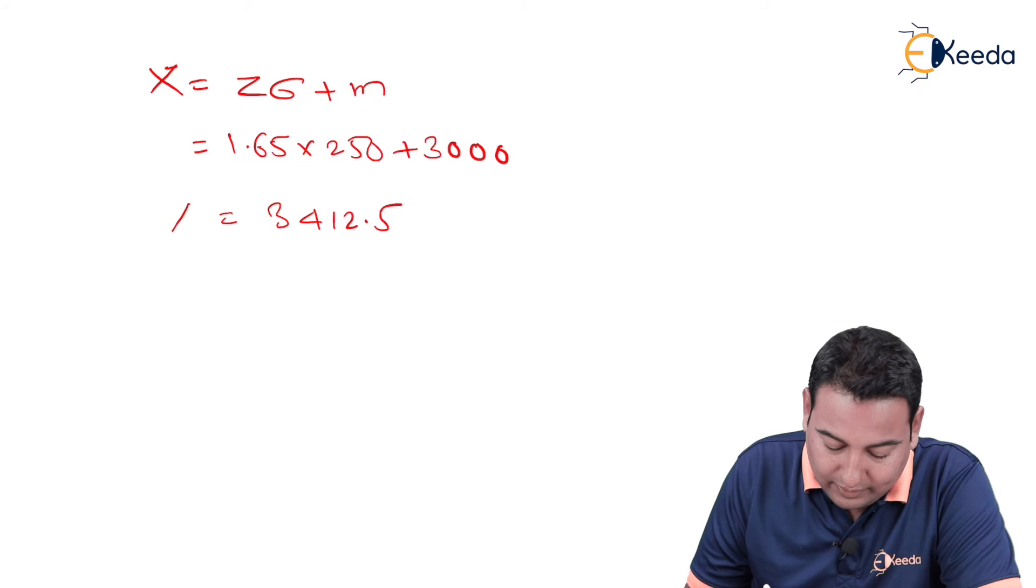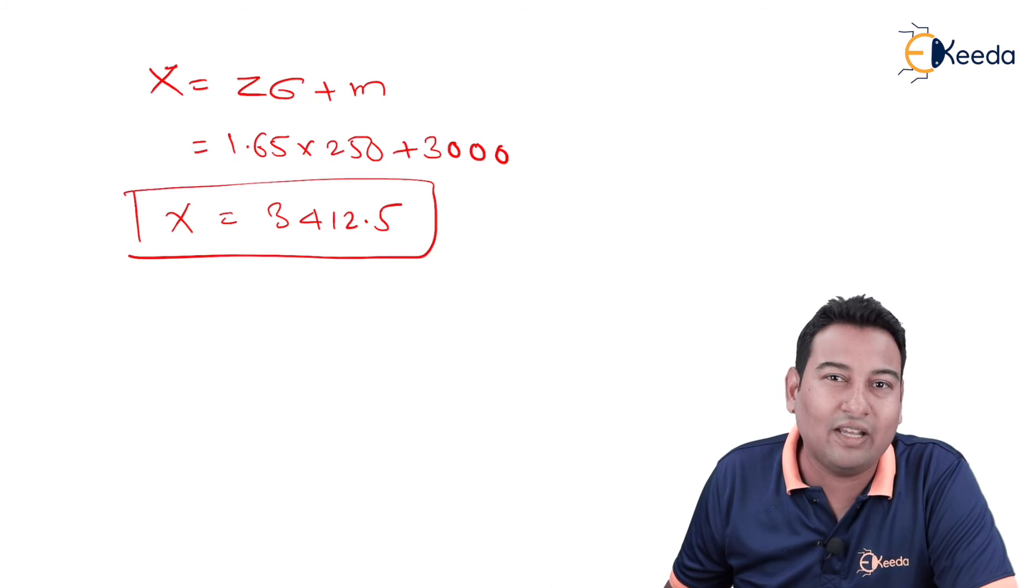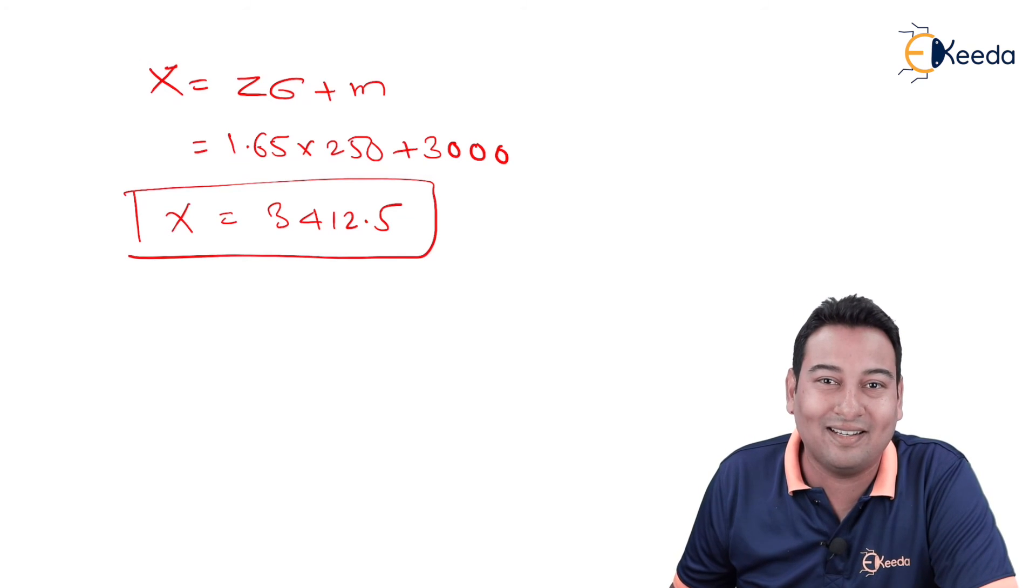If you simplify you will get the answer as 3412.5. This is the minimum salary of a worker in the organization so that he will belong to top 5% worker. Hope this example is clear. In the next videos we will discuss few more examples. Thank you.